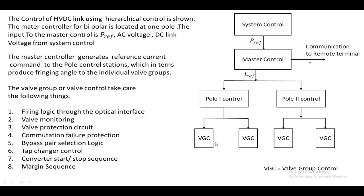Under the pole-1 control, there is VGC-1 and VGC-2 — VGC stands for valve group control. The master control requires some information to generate a current reference: first is the P-reference, which is how much real power we have to transmit on the DC link; next are the reference AC voltage and reference DC voltage. These are supplied by system control to master control. The master control generates the I-reference to both pole stations, which then issue firing angle commands to the group of valves in station-1 and station-2.